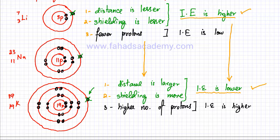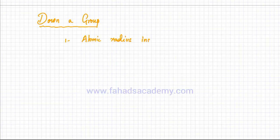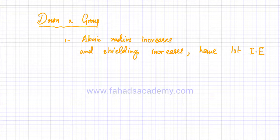So we can now state the key points for your papers. As you move down a group, the atomic radius — or the distance of the outer electron — increases, and shielding increases. Hence, the first ionization energy decreases. This is what you're going to write when a question is asked about what happens to the first ionization energy as you move down a group.